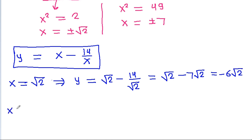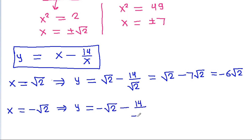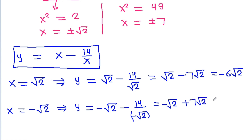If x equals minus square root of 2, then y equals minus square root of 2 minus 14 divided by minus square root of 2. That is minus square root of 2 plus 7 times square root of 2, which equals 6 times square root of 2.